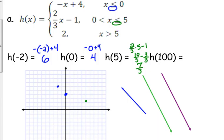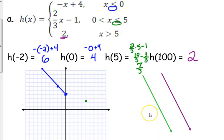I made this next one a bit extreme just to prove a point. H of 100: 100 is greater than 5, but it doesn't matter what it is — your value is going to be 2, because that piece is just a constant. So we can't really plot that on our graph here. Let's graph this. Negative x plus 4 when x is less than or equal to 0 — I have the point at 0 and a point to the left of it, so I can draw my line through those two points. Make sure it has a slope of negative 1.